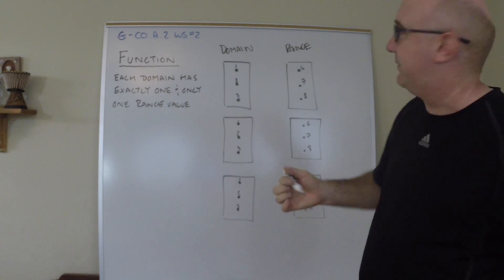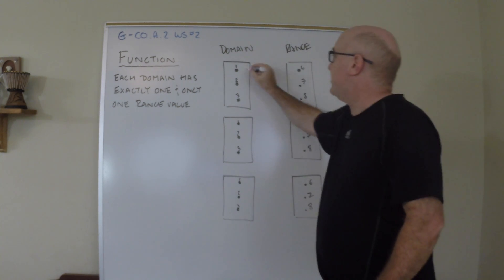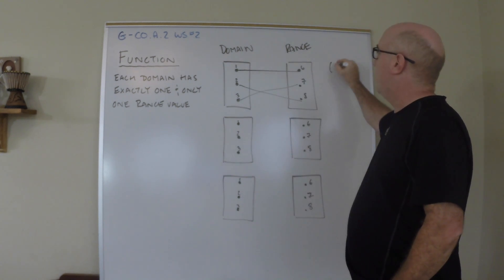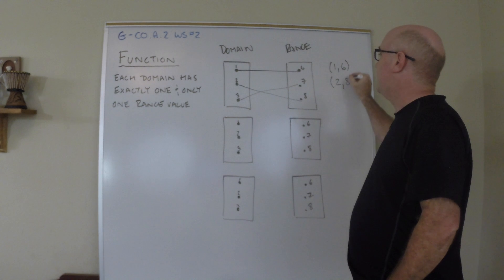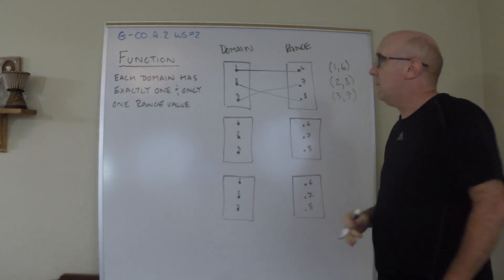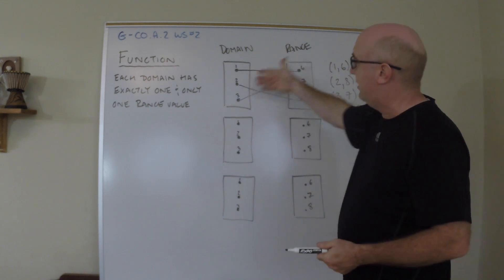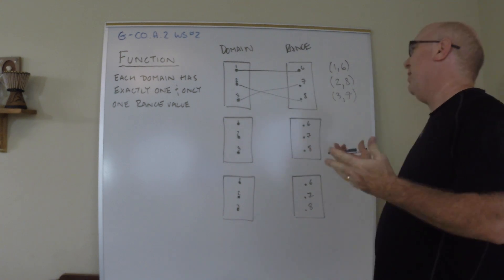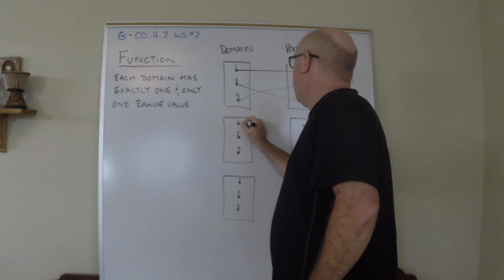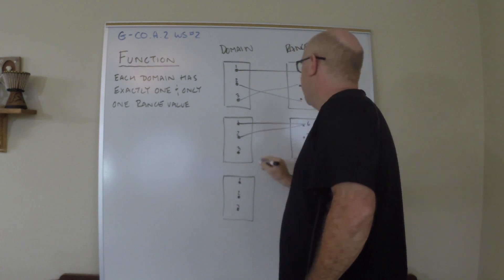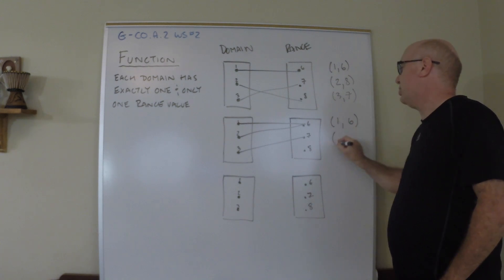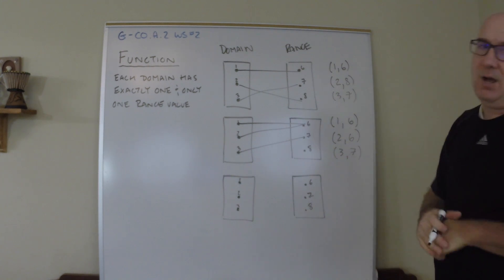So here's a couple of cases. Here's some domain items, here's a range item. So if one and three worked out, two and eight worked out, three and seven worked out. One and six, two and eight, three and seven. This is a function. For each value over here we got a value over in the y values or the range.